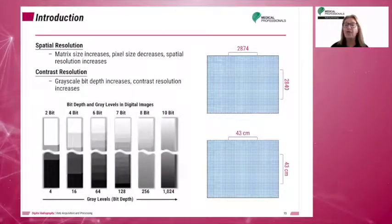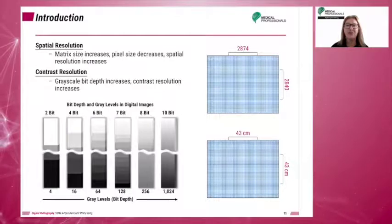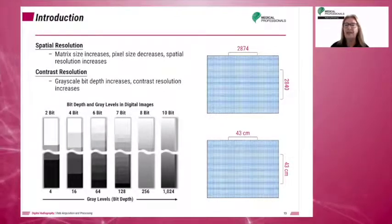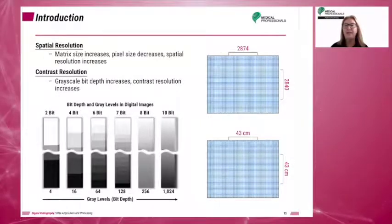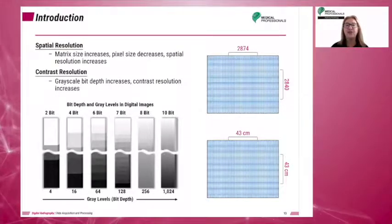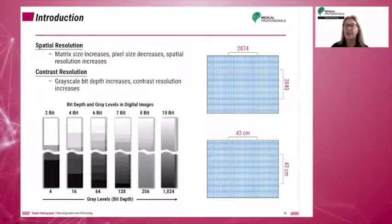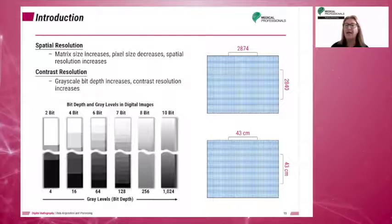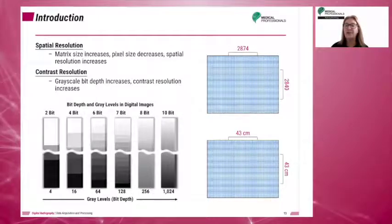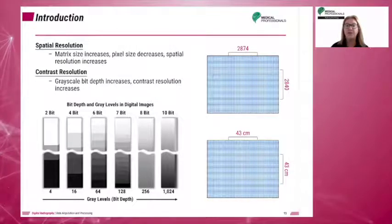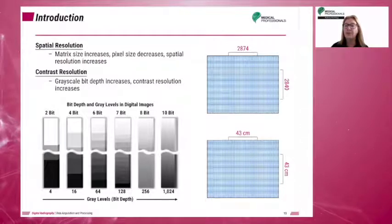The overall size of the matrix is termed the field of view, or FOV. In digital imaging, matrix size is determined by the size of the detector or image receptor. The size of the matrix determines the resolution. A larger matrix size results in smaller pixels, which in turn provides the best spatial resolution, making the system better able to image smaller objects.